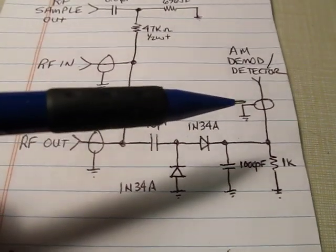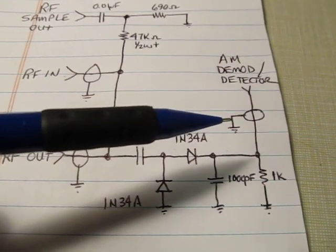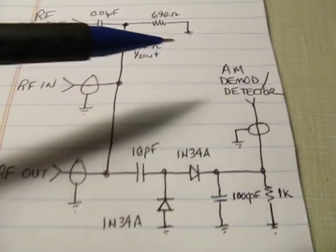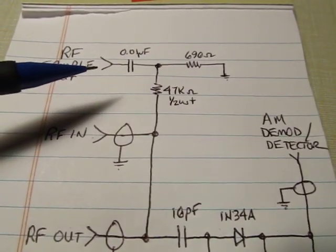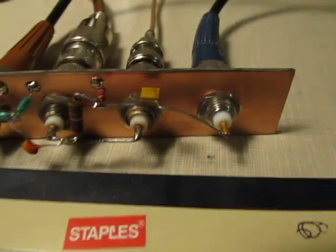So this signal here would give us essentially the RF amplitude, or an AM demod, whereas this signal actually shows us the RF carrier itself.